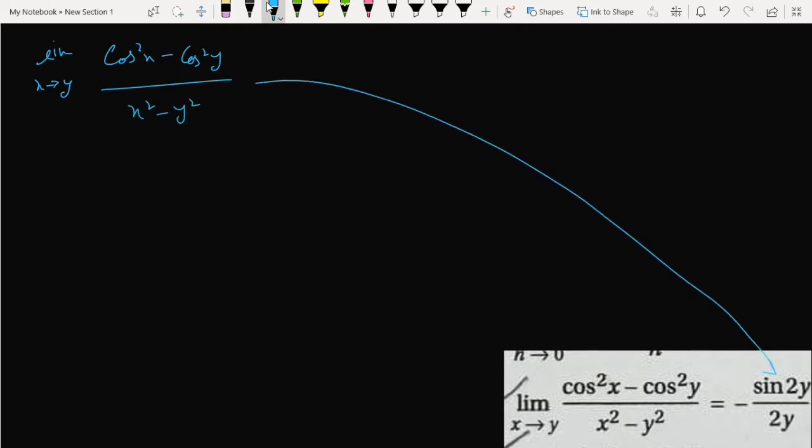So let's see how we can break it. We use the difference of squares formula: x² minus y² equals (x+y)(x-y). And this one becomes cos²x minus cos²y equals (cos x + cos y)(cos x - cos y).